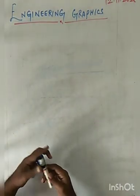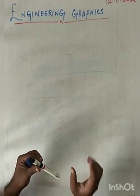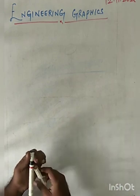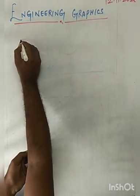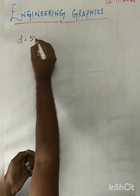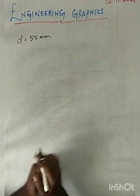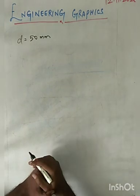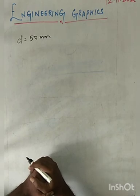First, we will learn parabola, then we will know other things. For drawing the parabola, the question is very simple: draw a parabolic curve in such a way that the distance from the directrix to focus is given. They usually give a specific distance — let me take the distance as 50mm. The question is: draw a parabolic curve and also draw a tangent and normal at any point. The tangent and normal is a new thing — I will tell you how to do it.